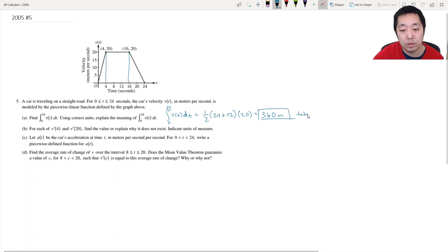It's the total displacement of the car in 24 seconds. For each of v prime of 4 and v prime of 20, find the value or explain why it does not exist. Because it would be the slope at time t equals 4, but you see the slope from the left and the right slopes from left and right are unequal.